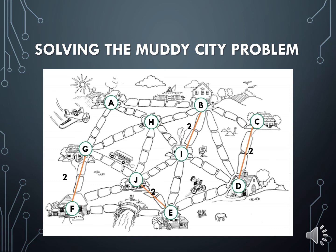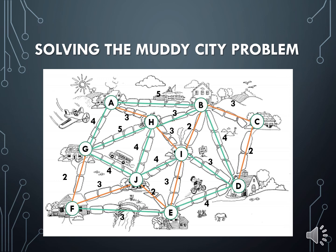Now, we can start choosing the edges of weight 3 that still allow us to have no cycles within the tree. Here, we can successfully choose EI, JF, HI, AH, and lastly BC. Now, we have successfully created a minimum spanning tree within the Muddy City. As you can see, we can definitely use Kruskal's algorithm to solve the Muddy City problem and meet the mayor's conditions of building a route that connects all 10 houses using the least amount of pavement stones.